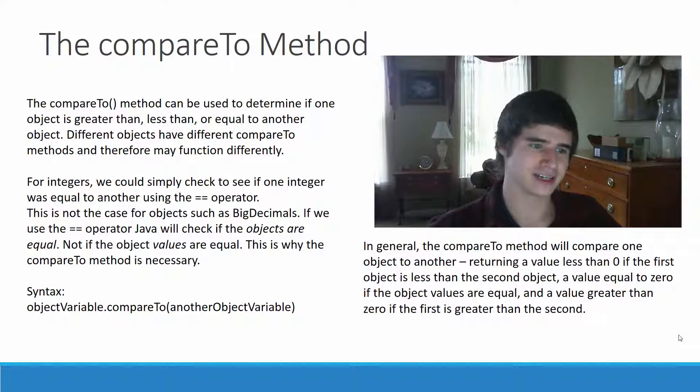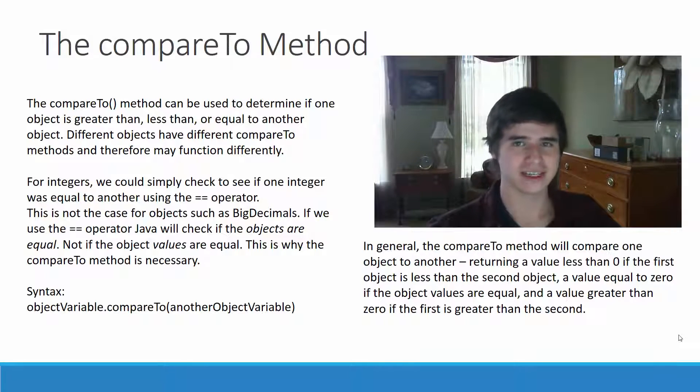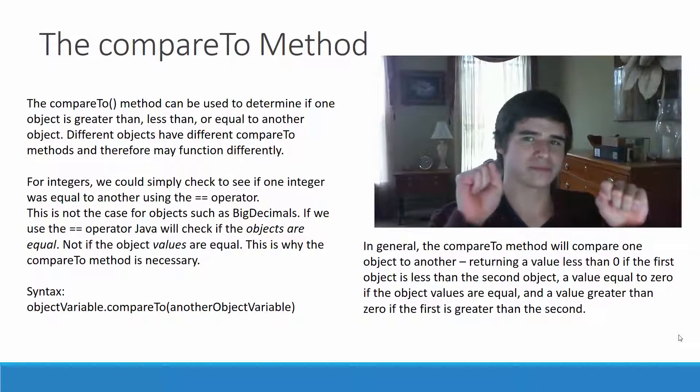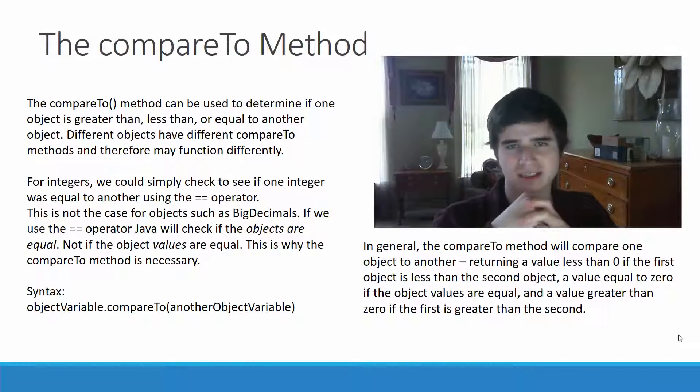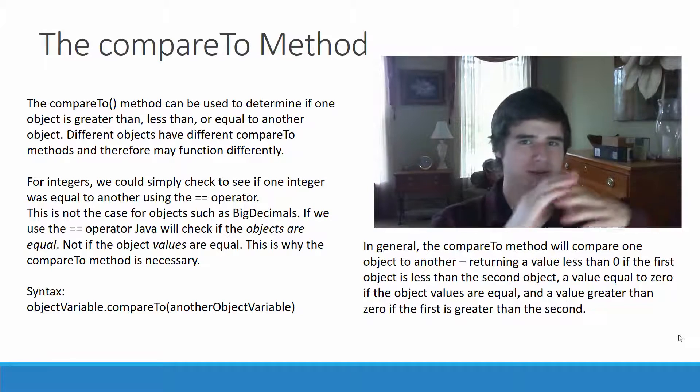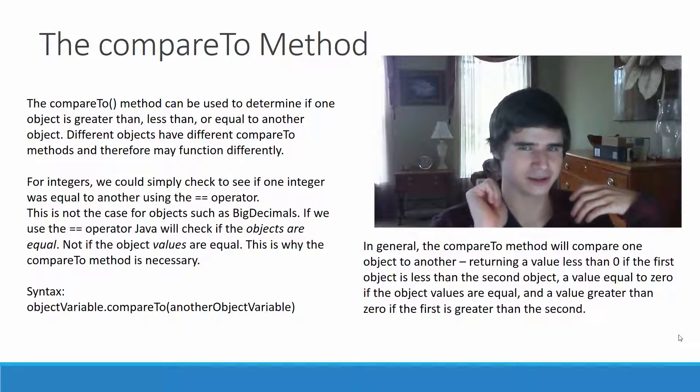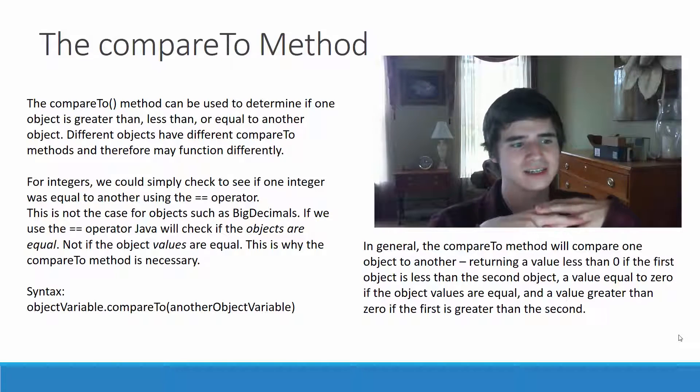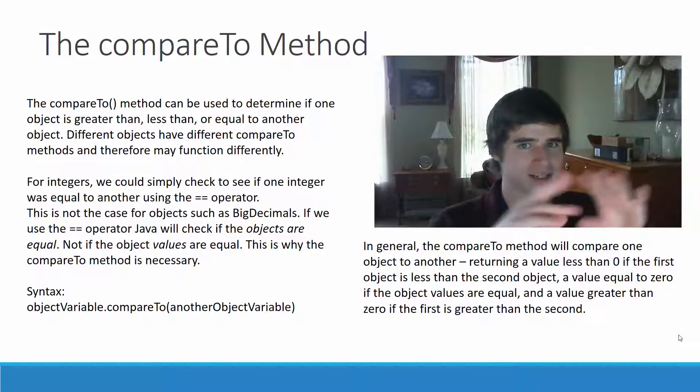For integers, we could simply check to see if one integer was equal to another using the EqualTo operator. This is not the case for objects such as BigDecimals. If we use the EqualTo operator, Java will check to see if the objects themselves are equal. So, if we had an object A and an object B, and they both have the same value, let's say we have two BigDecimals with a value of 1, Java will see object A and object B and say those two are not equal to each other, even though they have the same exact value, because they are separate objects.